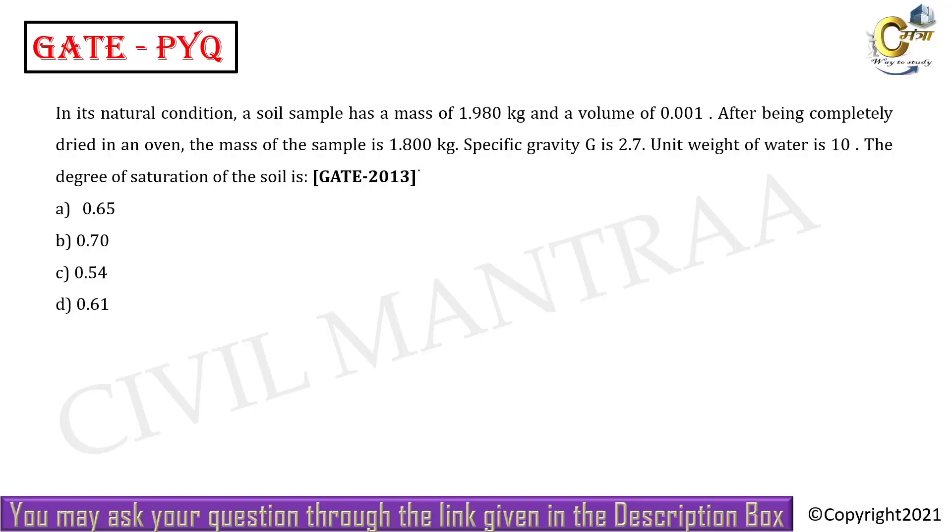Hello students, welcome to Civil Mentor. The question is: In its natural condition, a soil sample has a mass of 1.980 kg and volume of 0.001 m³. After being completely dried in an oven, the mass of the sample is 1.800 kg. Specific gravity G is 2.7 and unit weight of water is 10. The degree of saturation of the soil S is asked.